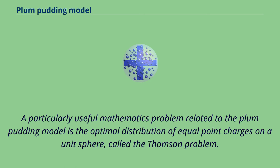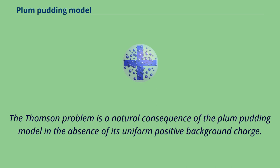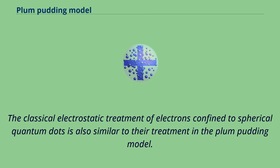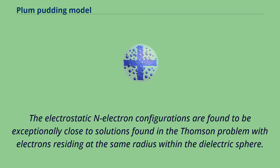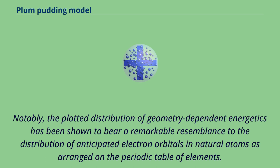A particularly useful mathematics problem related to the Plum-Pudding model is the optimal distribution of equal point charges on a unit sphere, called the Thomson problem. The Thomson problem is a natural consequence of the Plum-Pudding model in the absence of its uniform positive background charge. The classical electrostatic treatment of electrons confined to spherical quantum dots is also similar to their treatment in the Plum-Pudding model. In this classical problem, the quantum dot is modeled as a simple dielectric sphere in which free, or excess, electrons reside. The electrostatic and electron configurations are found to be exceptionally close to solutions found in the Thomson problem, with electrons residing at the same radius within the dielectric sphere. Notably, the plotted distribution of geometry-dependent energetics has been shown to bear a remarkable resemblance to the distribution of anticipated electron orbitals in natural atoms as arranged on the periodic table of elements.